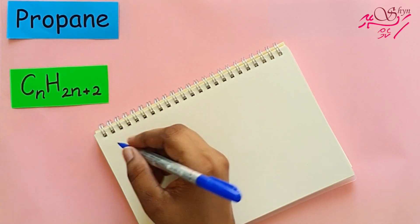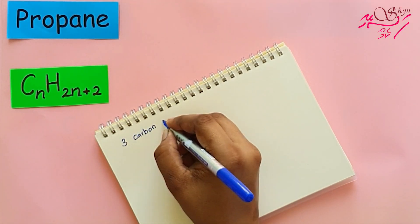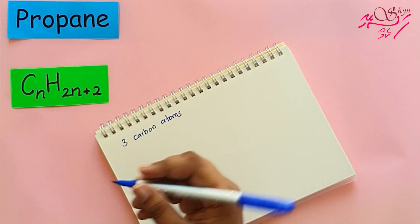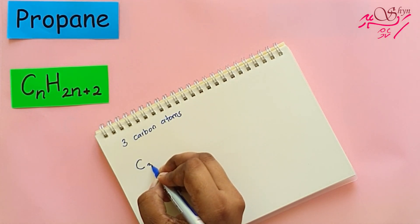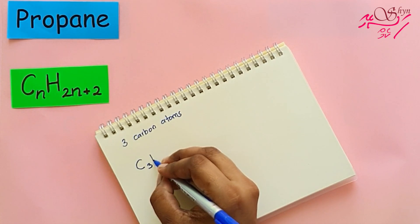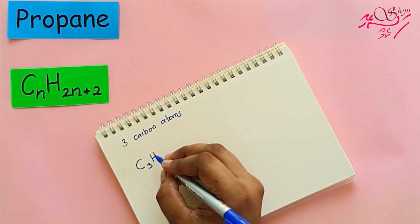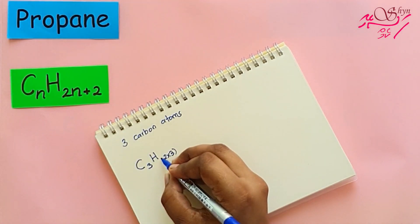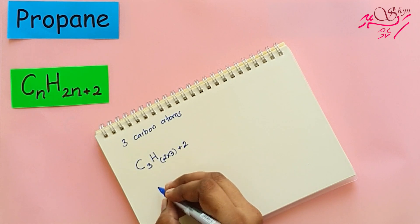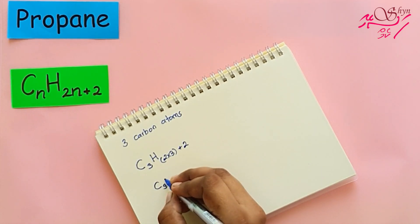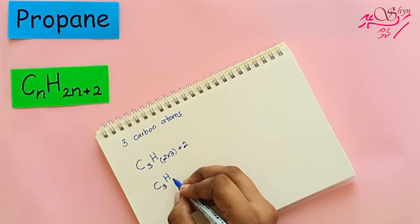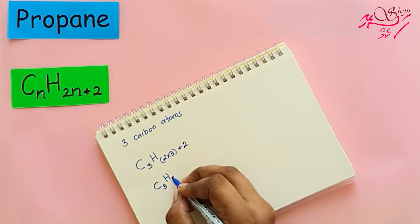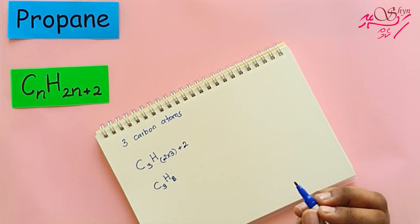Propane has three carbon atoms. Using CₙH₂ₙ₊₂ with N=3: C₃H₂⁽³⁾₊₂, so 2 multiplied by 3 plus 2 gives H₈. The molecular formula is C₃H₈.